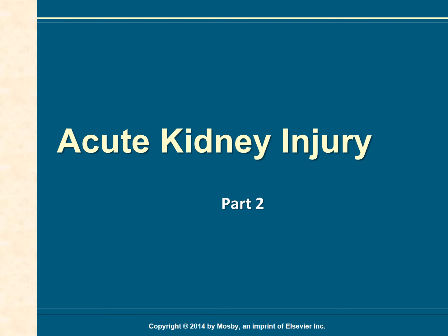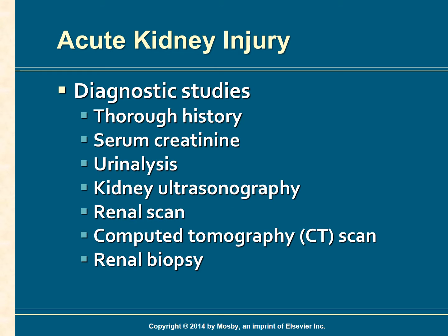To continue with acute kidney injury, the diagnostic studies involve a thorough history, which is essential for diagnosing the etiology of AKI. Consider pre-renal causes when there is a history of dehydration, blood loss, or severe heart disease. An increase in serum creatinine may not be evident until there is a loss of more than 50 percent of kidney function.